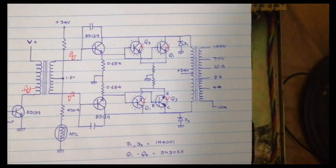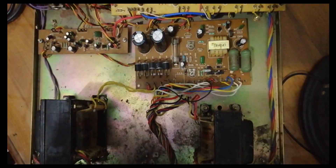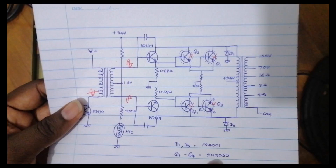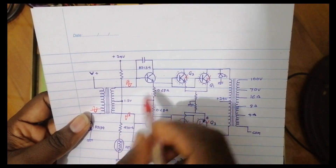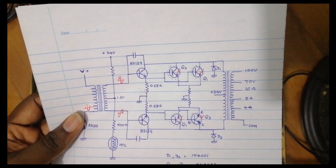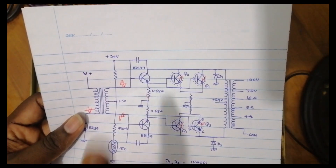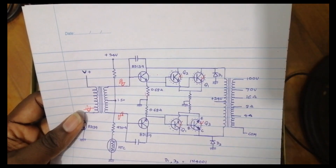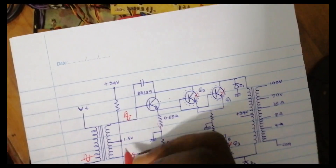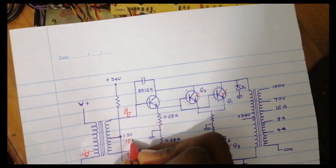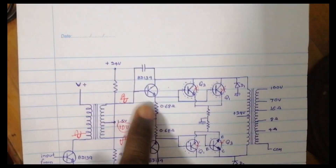This transistor is very good. This transistor has a 0.8-ohm resistor. This is the first part of the transistor analysis.